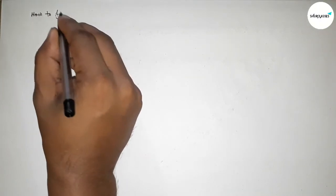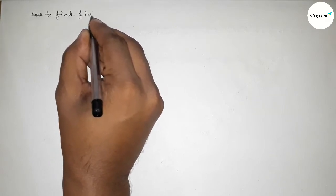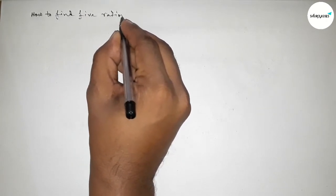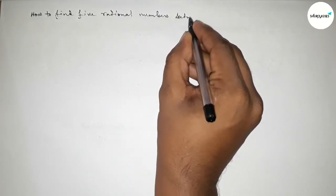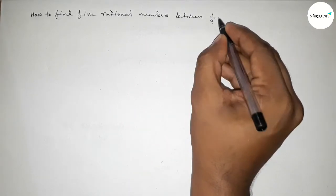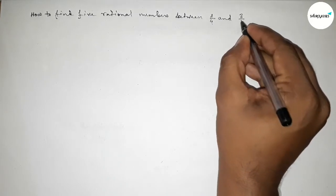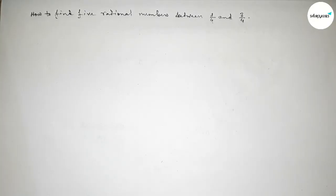Hi everyone, welcome to SI Share Classes. Today in this video we have to find five rational numbers between 1 over 4 and 3 over 4. So let's start the video. First of all, let's solve this problem.